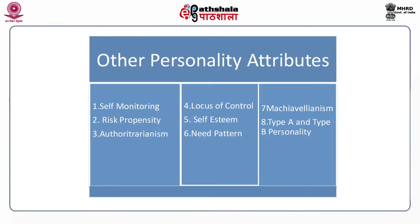Number five is self-esteem. There can be two types of personalities based on self-esteem: individuals with high self-esteem and individuals with low self-esteem. People with high self-esteem are confident and fast in taking challenges and making decisions, whereas people with low self-esteem always seek approval from their seniors before doing any work or making decisions. Their level of satisfaction is lower compared to people with high self-esteem. Number six is need patterns. Individuals with a high need for achievement have a special desire to perform challenging tasks well and meet their own personal standards for excellence. Such individuals are generally found in high managerial and leadership positions.